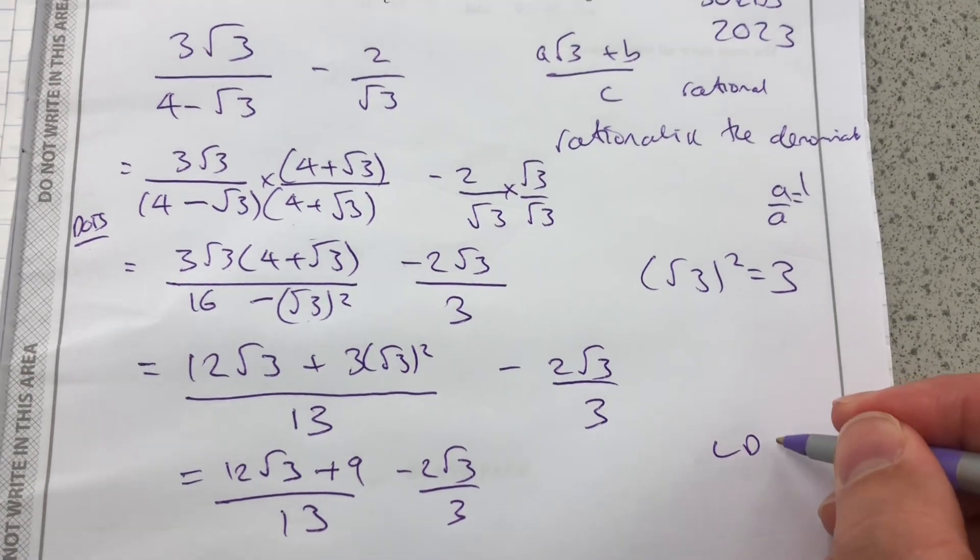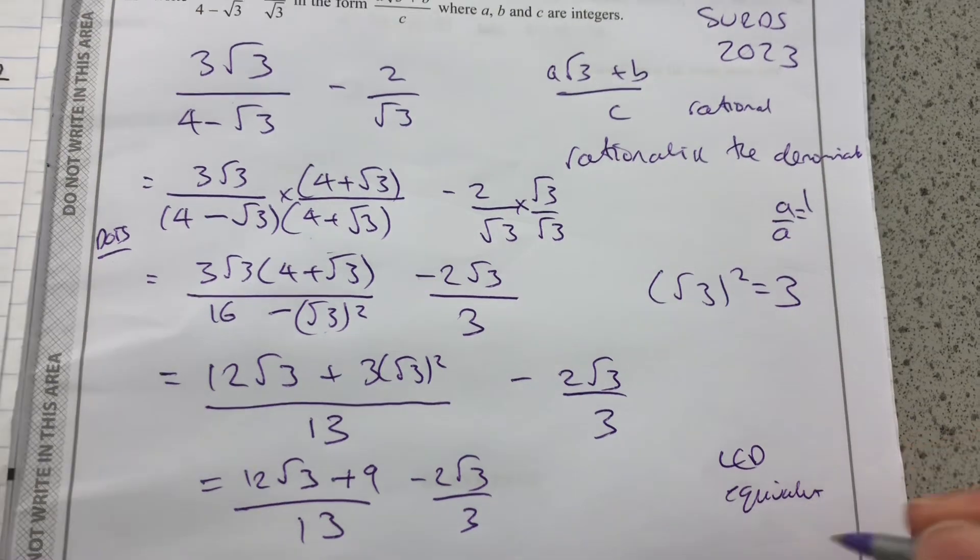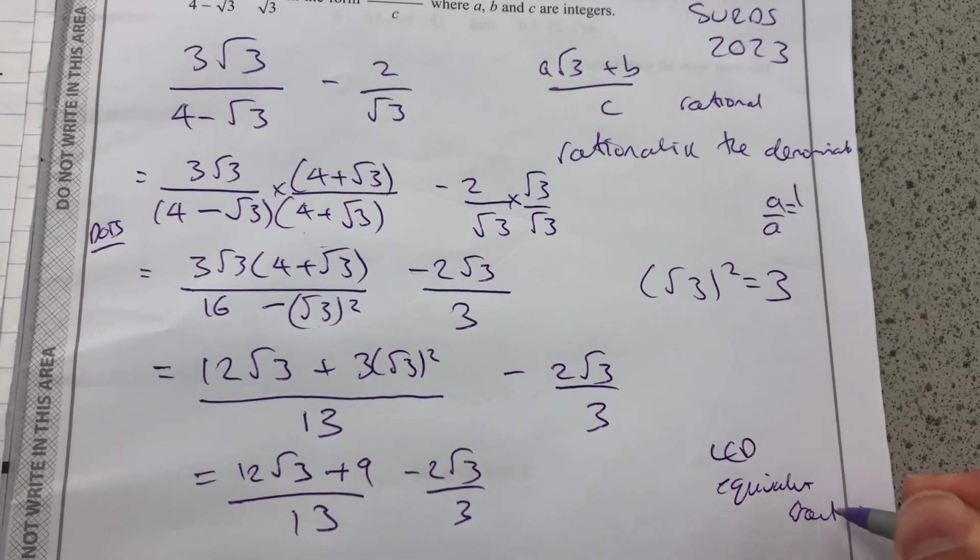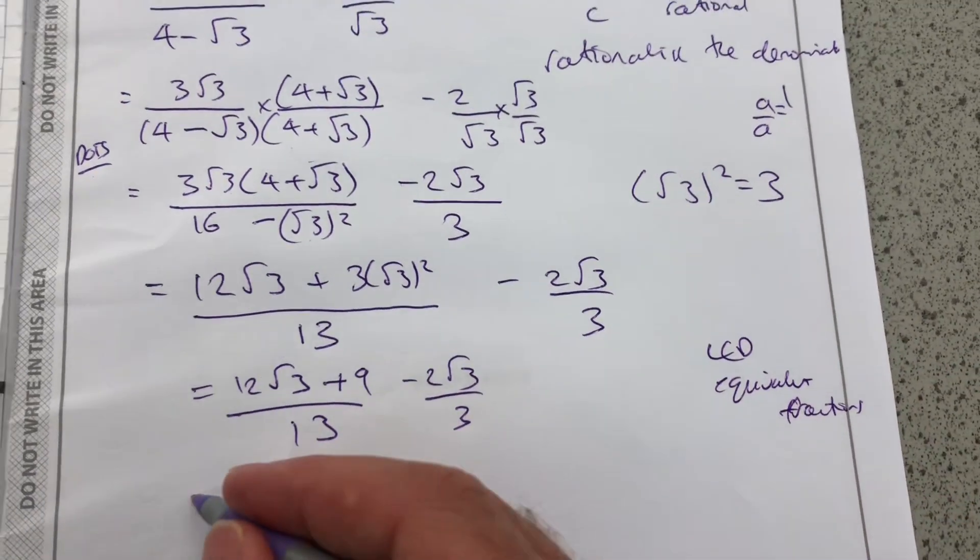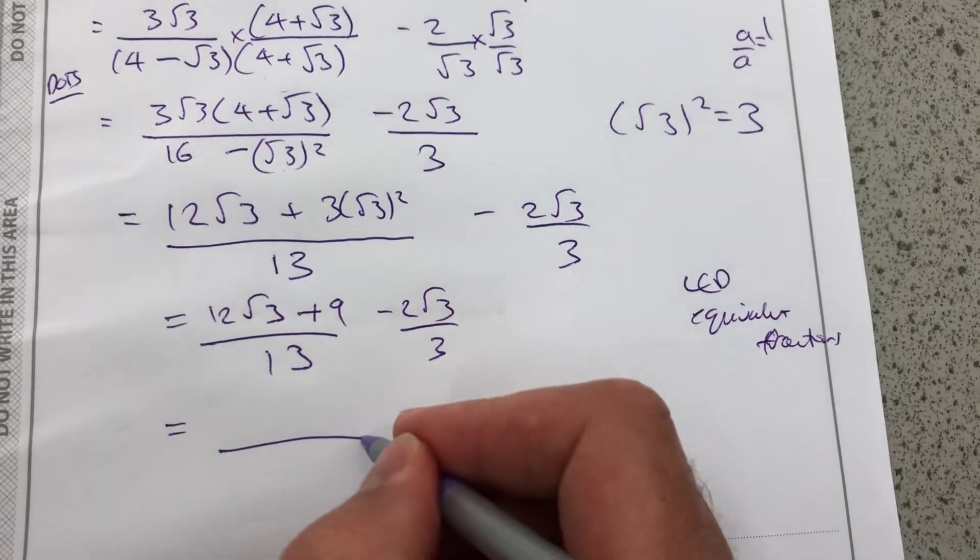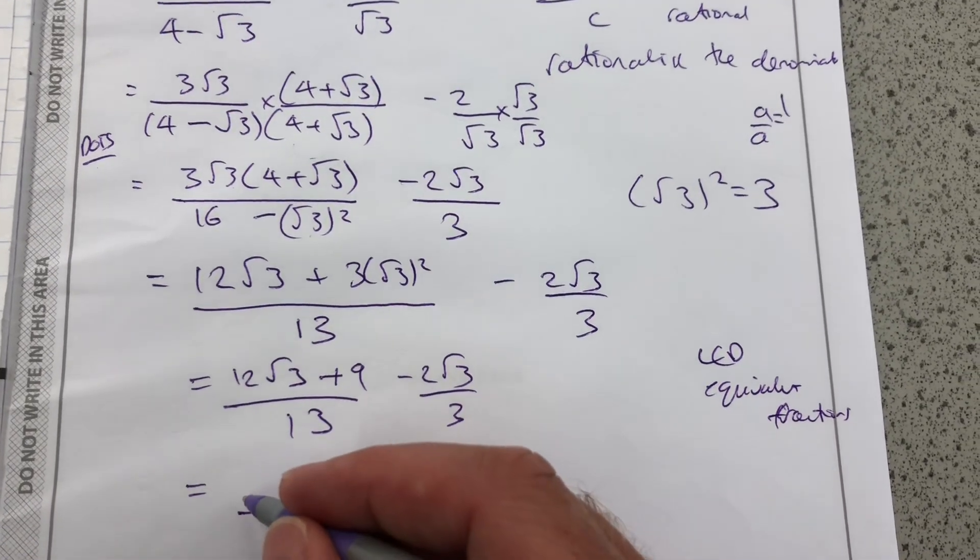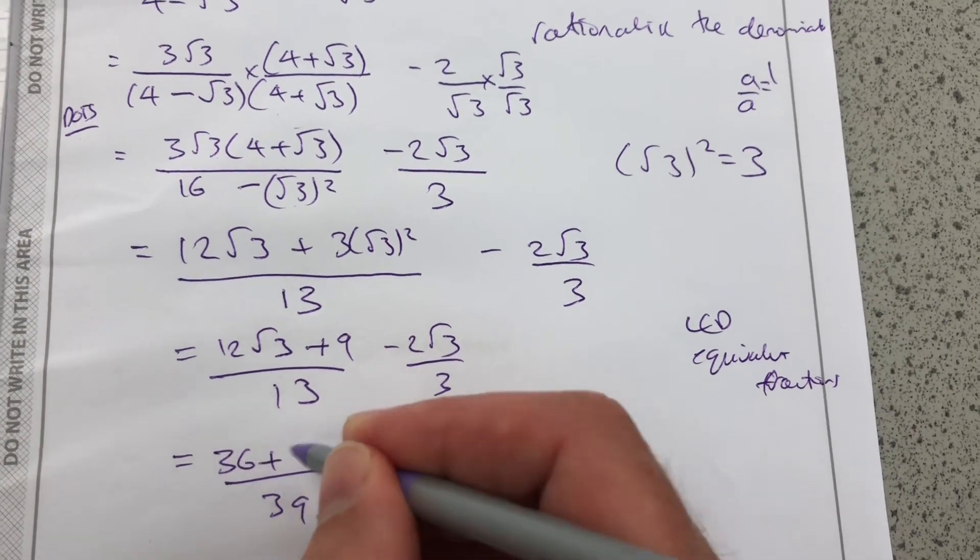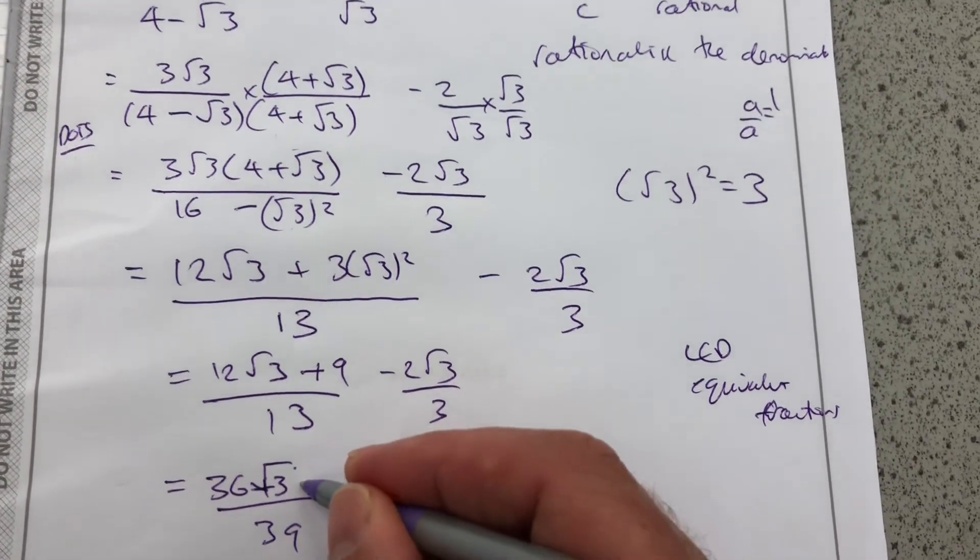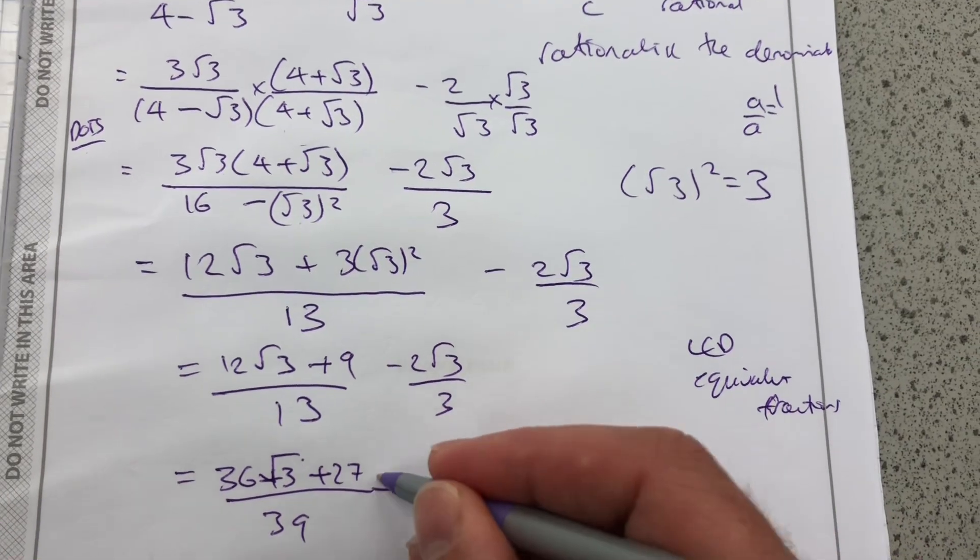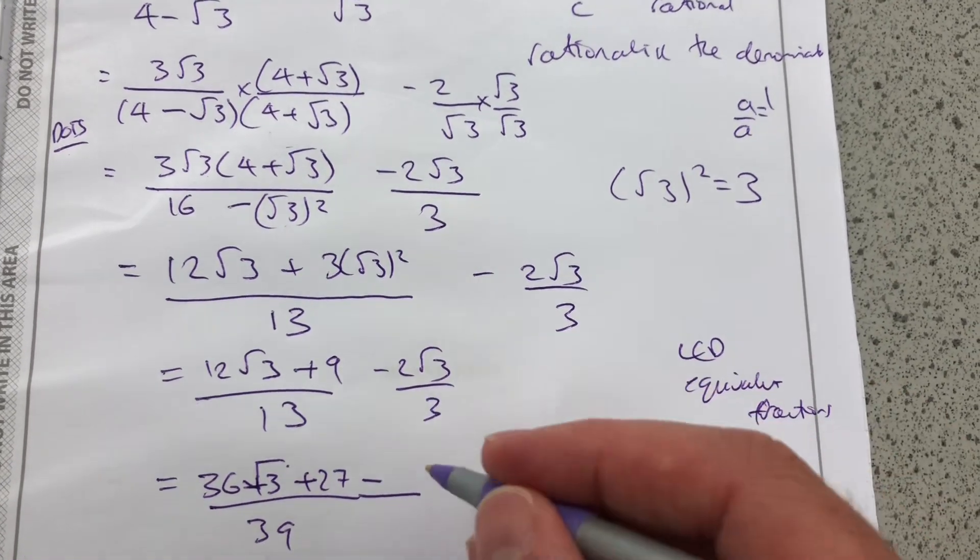I need a lowest common denominator to find equivalent fractions. This is where our earlier work on fractions is useful. And the lowest common denominator is going to be 39. So I've multiplied this by 3. So I'm going to have 36 root 3 plus 27 minus this times by 13 now.